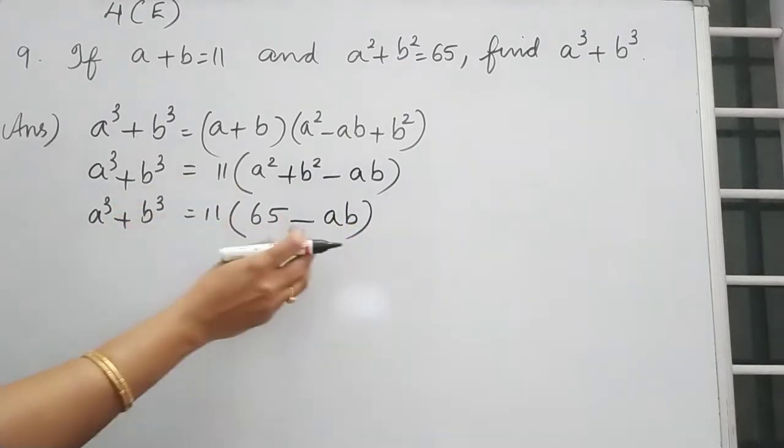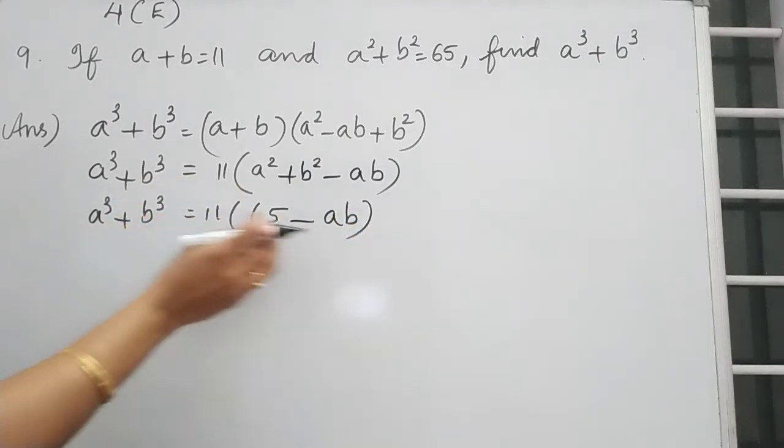So we don't know A cube plus B cube and AB. So what we want to do? We want to find out AB. So how can we find AB?